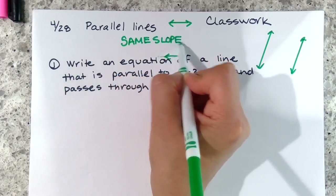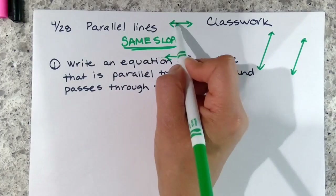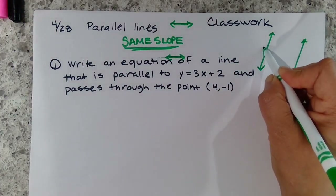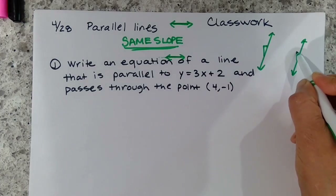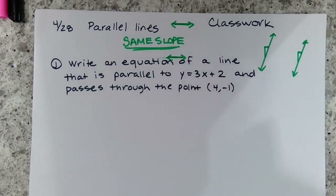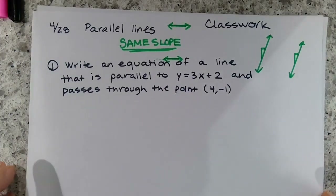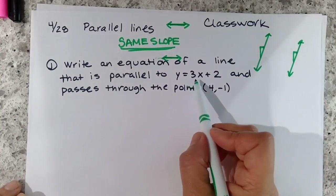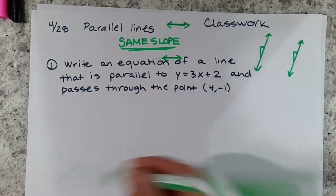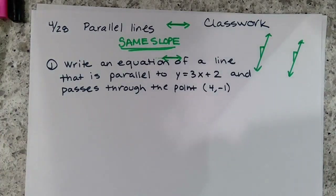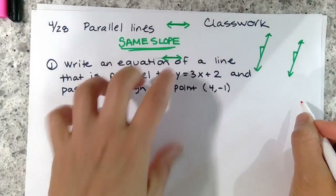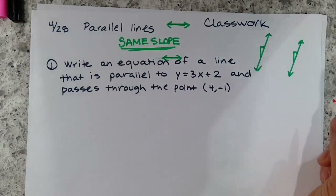Two lines that are parallel have the same slope. This has a zero slope, this has a zero slope — whatever line it is, it's increasing at the same rate. Our first problem says: write an equation of a line that is parallel to y equals 3x plus 2 and passes through the point (4, -1). We're going to solve it algebraically.